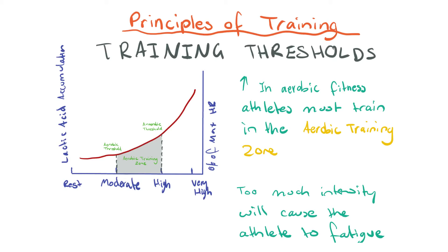Once the intensity of exercise increases above that anaerobic threshold, we are at very high intensity and lactic acid energy systems become more dominant than the aerobic system. Athletes need to be careful not to train too far past the anaerobic threshold, as too much intensity will cause the athlete to fatigue quite quickly.